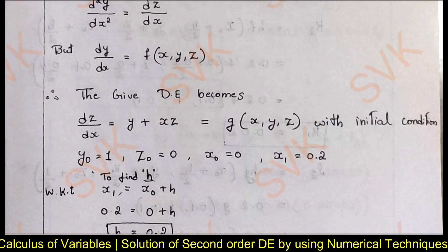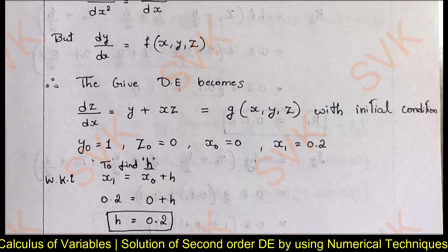To find the value of h, we have x₁ = x₀ + h, where x₁ = 0.2. Substituting x₀ = 0, we get h = 0.2. This h is the step size.